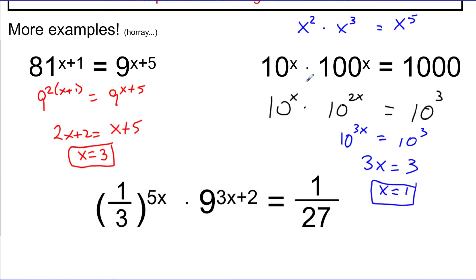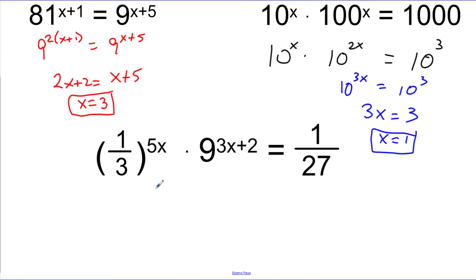So you have to do a combining step: get the bases to match by rewriting 100 as 10 squared, then use the multiplication property — keep the base, add the exponents. Here's the last example, which introduces fractions. Looking at the numbers 3, 9, and 27, the common base is 3. I want all of these terms to have a base of 3. The 9 is easiest — it's just 3 squared — and I multiply that with the exponent already there.